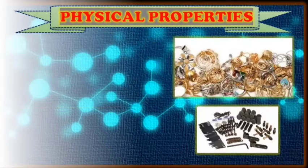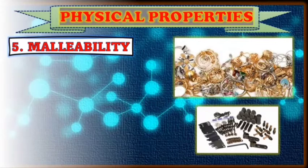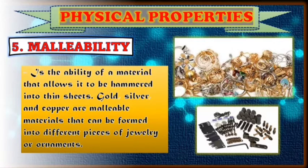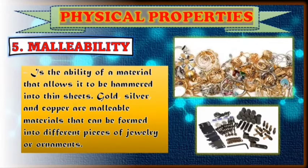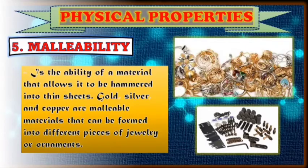Another physical property is what you call malleability. Malleability is the ability of the material that allows it to be hammered into thin sheets. Just like gold, silver, and copper are malleable materials that can be formed into different pieces of jewelry or ornaments. Since iron can be hammered into thin sheets, it can be used as a roof, as gates, and as body parts of machines. So these large metals are hammered to make them thin and formed into jewelry or body parts of vehicles or machines.